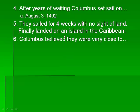They sailed for four weeks with no sight of land. Can you imagine being on a ship for four weeks, not really knowing where you're going, not sure how long it's going to take, and you haven't seen land in weeks? For all you know, you could just be going in a big circle in the middle of the Atlantic Ocean. But finally they land on an island in the Caribbean Sea, just south of Florida. But Columbus believes that he is in Japan.